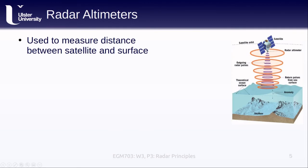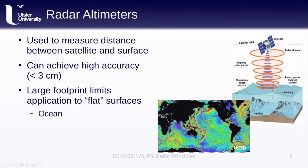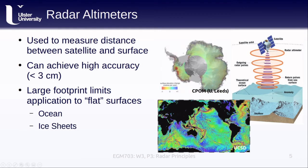Radar altimeters are used to measure the distance between the satellite and the earth's surface. They can achieve very high accuracy down to as little as about three centimeters difference, which is incredibly impressive given that we're making these measurements from about 700 kilometers away. The large footprint of the altimeter signal however means that we're limited to measuring the height of very large relatively flat surfaces like the ocean or the interior of the ice sheets.